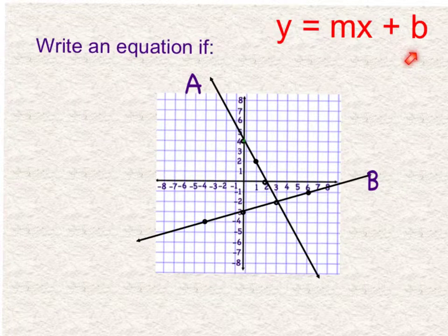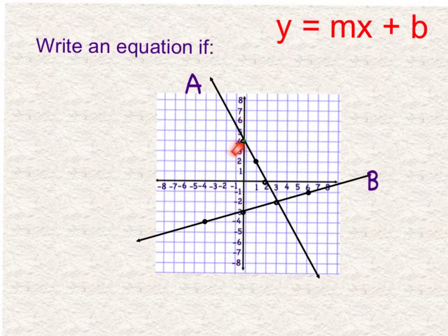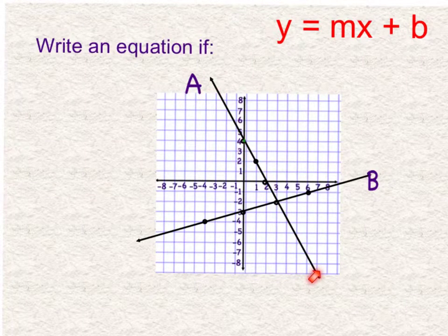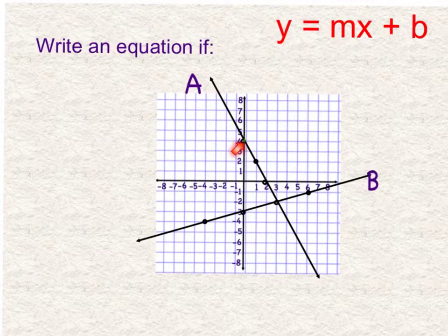From a graph, it is really easy to find that. The y-intercept is just where it crosses the y-axis. So if we're dealing with example A, this line right here, we find where it crosses the y-axis, which is 4. So that is my b.